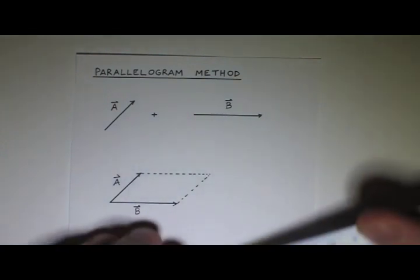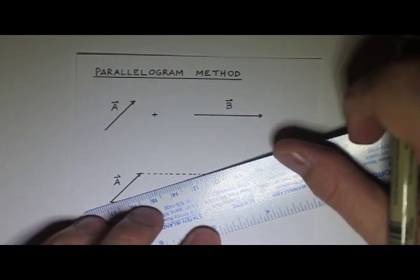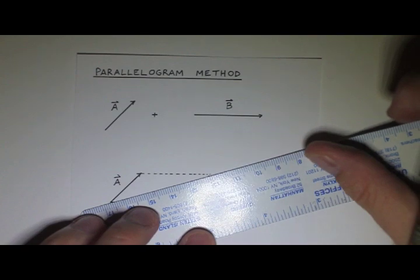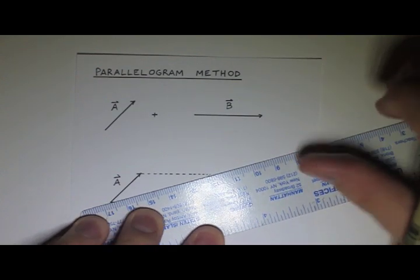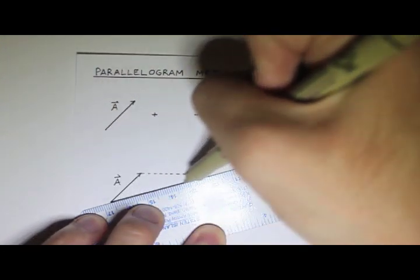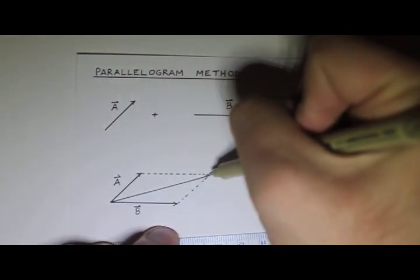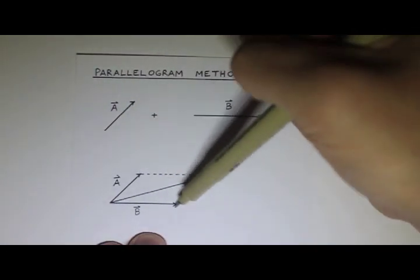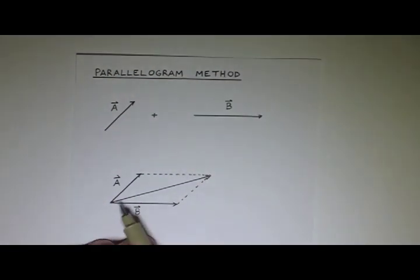And then to get A plus B, you draw the diagonal of the parallelogram. And you want to make sure you start at the point where the tails coincide and go all the way across. In other words, you don't want to do this diagonal. You want to do this diagonal. And so this vector here is the sum or the resultant A plus B.